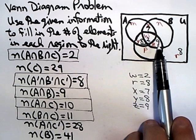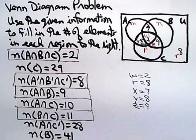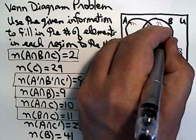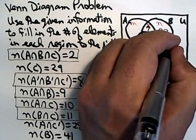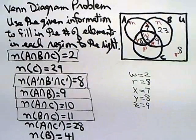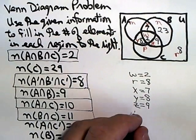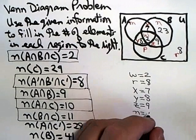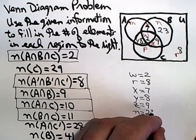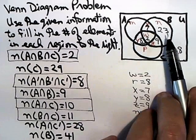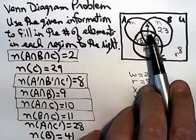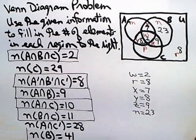So 7 and 2 is 9, another 9 is 18. So whatever goes in here is going to be 41 minus 18. And I believe that would be 23. So that tells me that N is equal to 23. And if you don't believe me, add them up. 23 plus 9 plus 2 plus 7 comes out to 41.